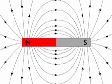How tightly packed the lines are tells us about the strength of the magnetic push or pull in that area. The more tightly packed, the stronger the force.